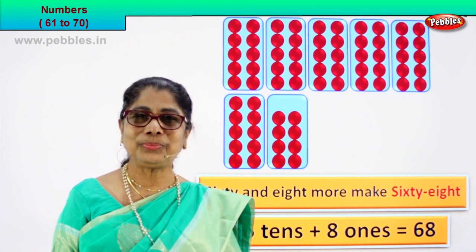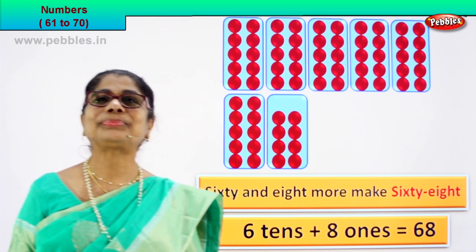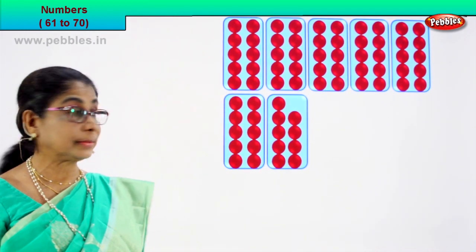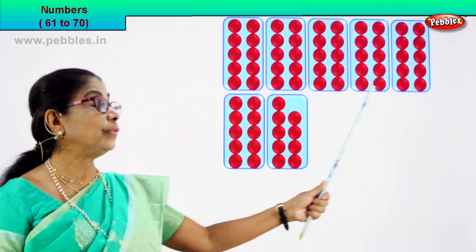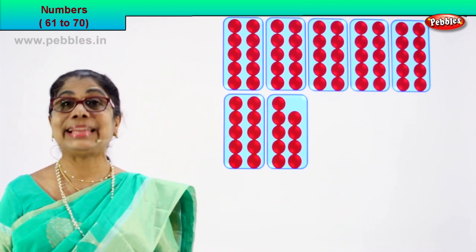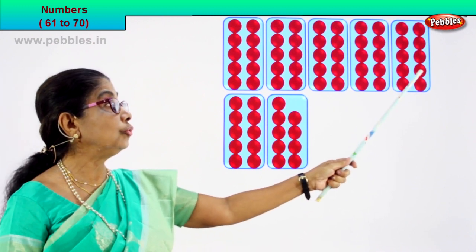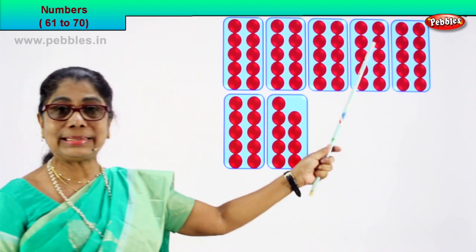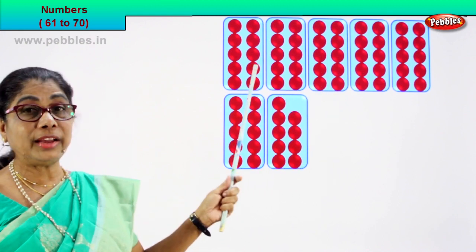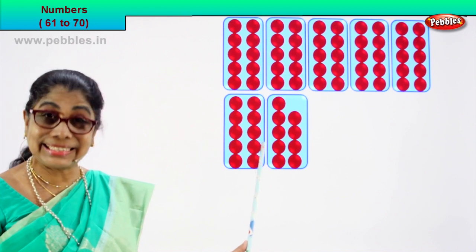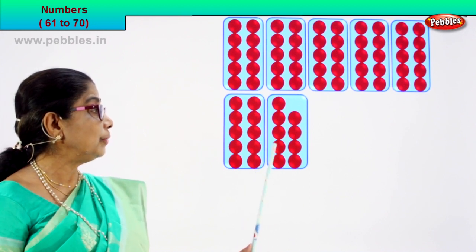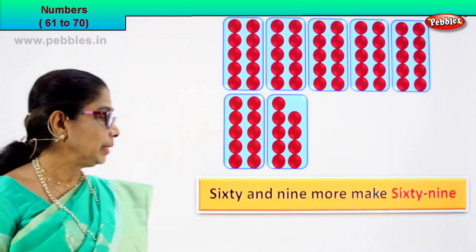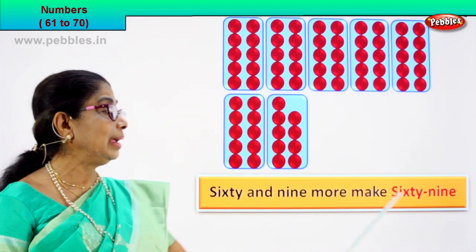Did you learn to count now? Shall we take our next number? Look what we have. Look at the number of boxes of tens. One, two, three, four, five, six. In all six boxes, there are ten. Let's count this box and see. One, two, three, four, five, six, seven, eight, nine, ten. There are ten. One ten, two tens, three tens, four tens, five tens, six tens. Sixty and one, two, three, four, five, six, seven, eight, nine. Sixty and nine more make sixty-nine.